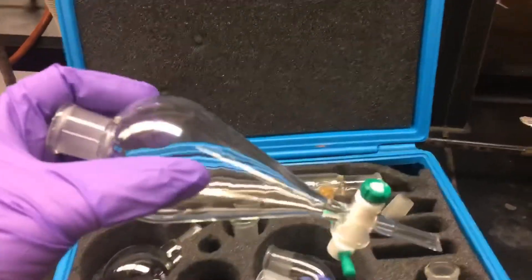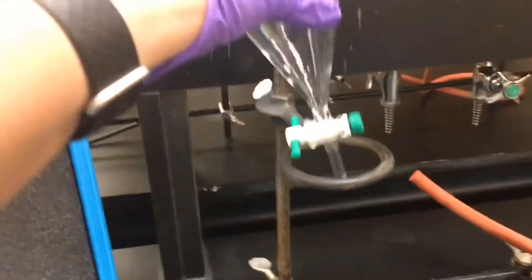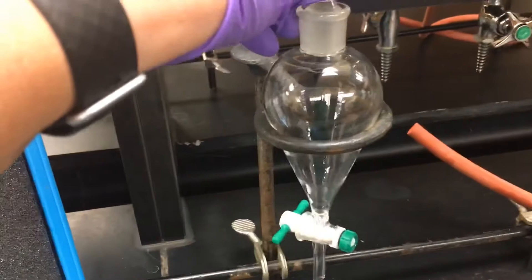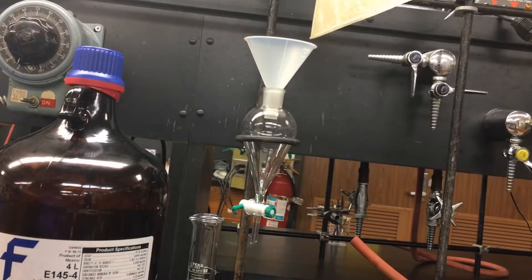The separatory funnel is found in the blue case in your common locker. We support separatory funnels by iron rings. Here I'm placing the separatory funnel in the iron ring and finding the stopper that fits securely.